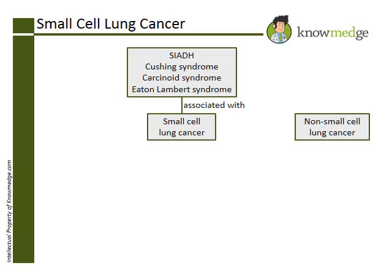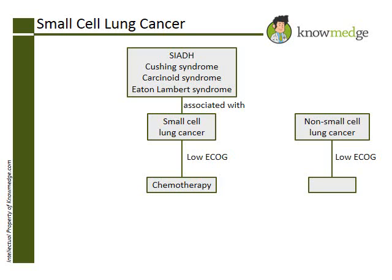Unlike non-small cell lung cancer, when patients with small cell lung cancer have a very poor Eastern Cooperative Oncology Group (ECOG) performance score, chemotherapy is recommended. If the patient had non-small cell lung cancer — which includes adenocarcinoma, squamous cell carcinoma, or large cell carcinoma — and presented with this scenario, then choice A, hospice care, would have been correct. Since he has small cell cancer, he doesn't need hospice care at this time.